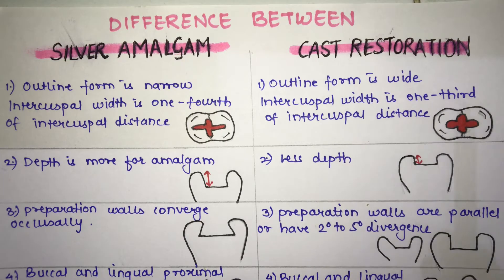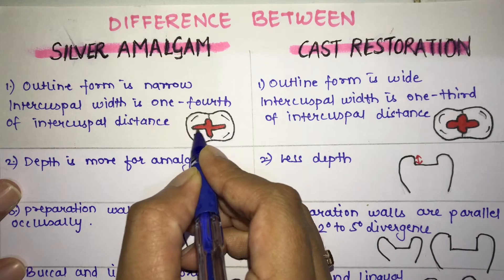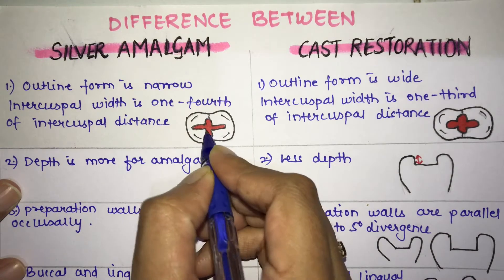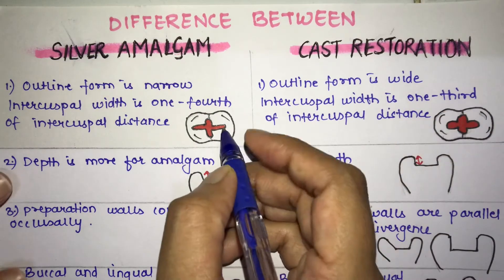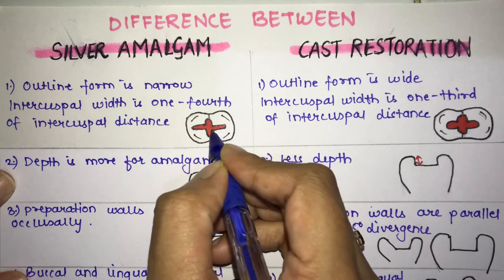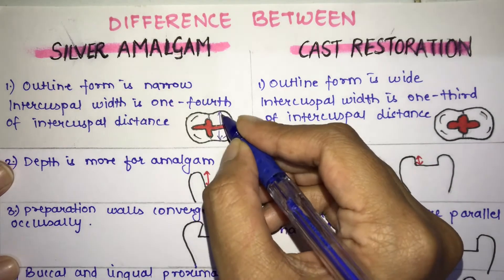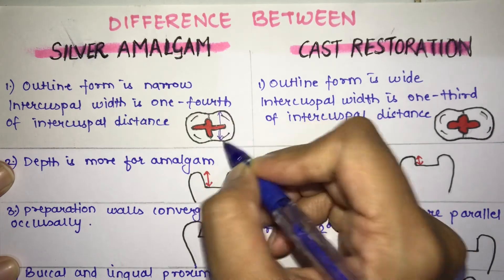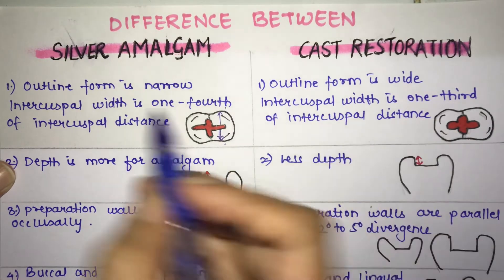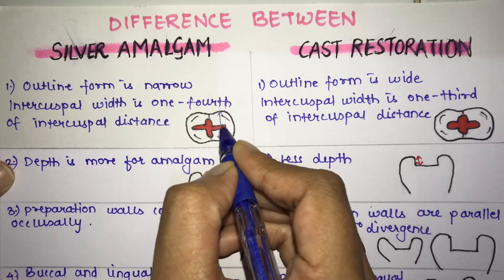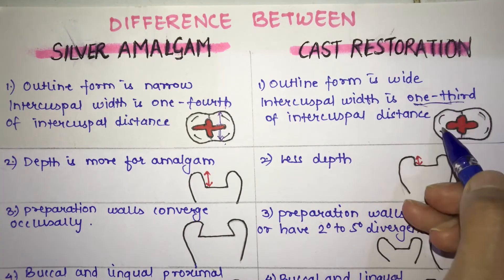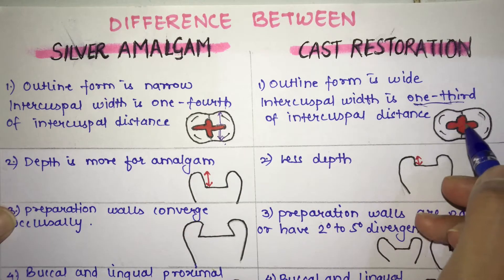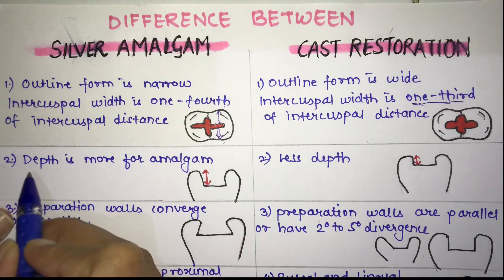The first difference is the outline form. In amalgam, the outline form is narrow, whereas in cast restoration the outline form is wide. The intercuspal width of the restoration should be one-fourth the intercuspal distance in amalgam, whereas in cast restoration it is one-third. So the cast restoration is wider.